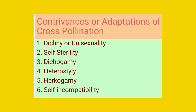Examples of protandrous flowers are China rose, cotton, and sunflower, while examples of protogynous flowers are Mirabilis and Magnolia. Such types of flowers go for cross pollination.